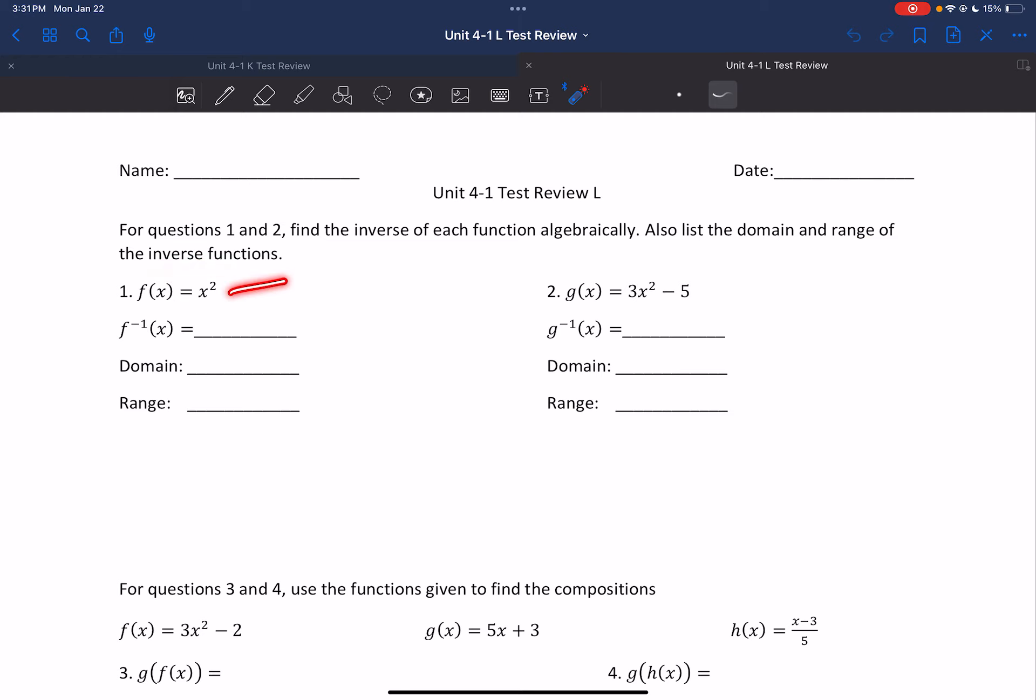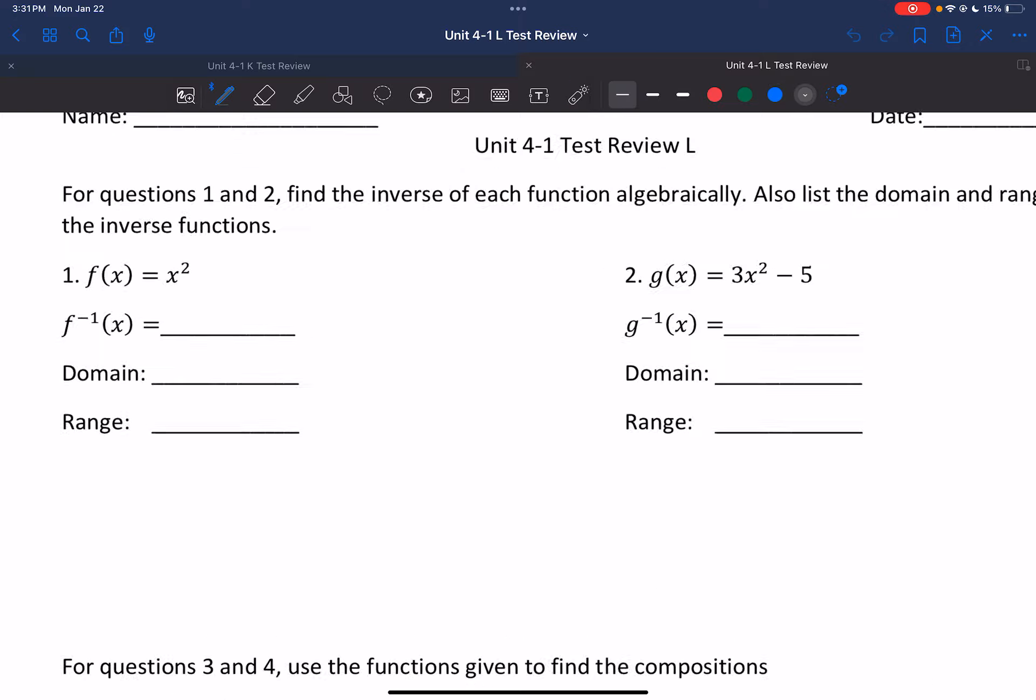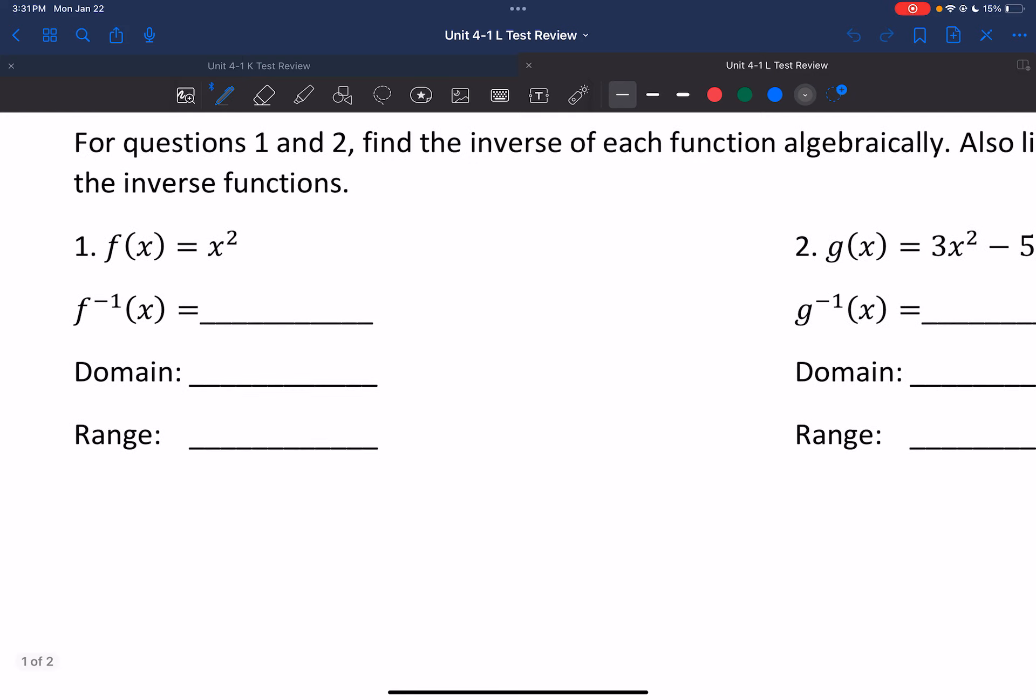So I don't care about the domain range of these two things. I care about what's the inverse's domain range. So let's start by inversing it. First step of inverse is rewrite and swap x and y. So we have x equals y squared. To solve it, we would square root it. So we would get the square root of x equals y. There's our inverse.